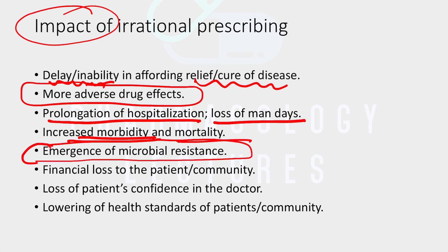Very importantly, there is antimicrobial resistance. Our government is always trying to create awareness about this. Antimicrobial resistance is a major burning issue in our country because of irrational antibiotic prescriptions. In viral diseases, antibiotics are prescribed and end up causing antimicrobial resistance. Sometimes patients don't complete the full course of antibiotics, also leading to resistance. New antimicrobials are not being developed at the same pace — it takes years to develop a single antimicrobial drug. This is a very alarming warning sign.